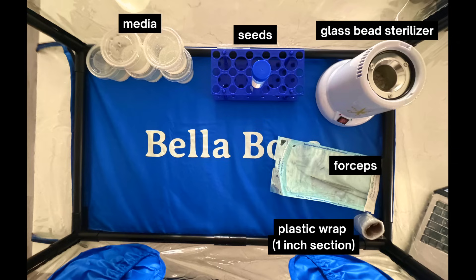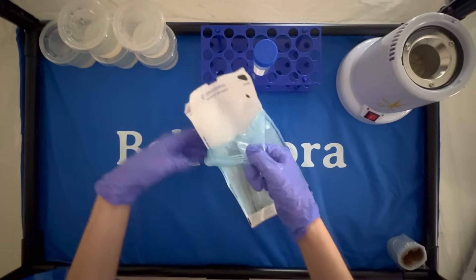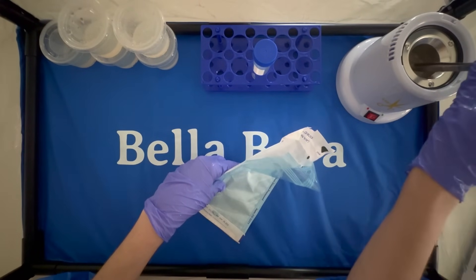Inside of the still air box, I have my forceps which I'll leave inside that pouch until I'm ready to use them. I also have a cheap glass bead sterilizer. I run the cord for the glass bead sterilizer through the side of the still air box. I start by opening the forceps and placing them directly into the glass bead sterilizer.